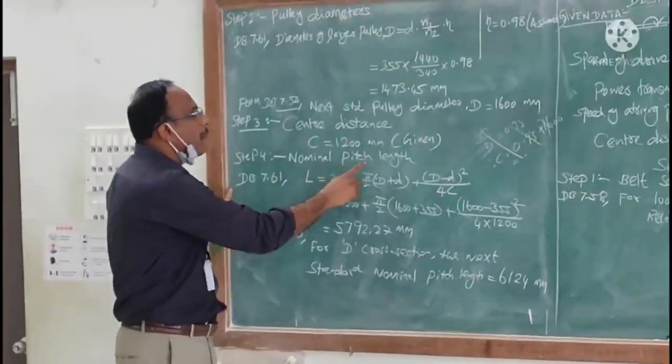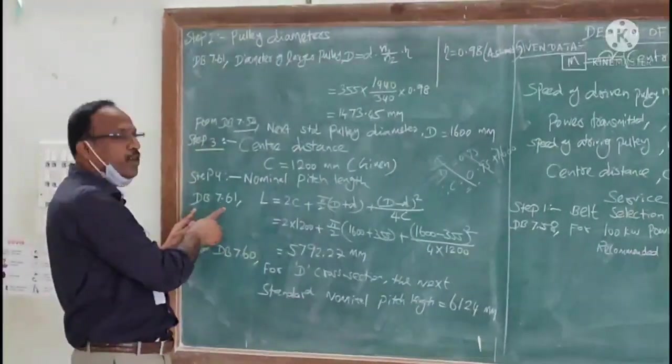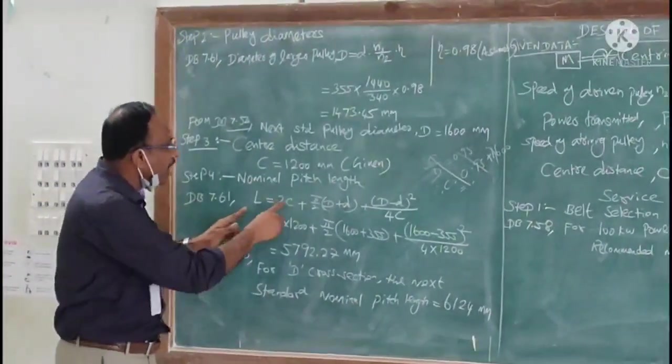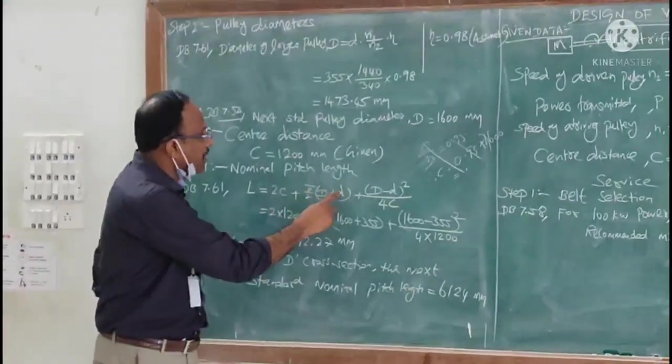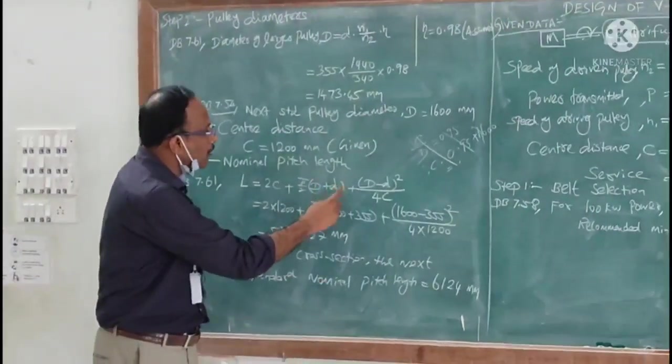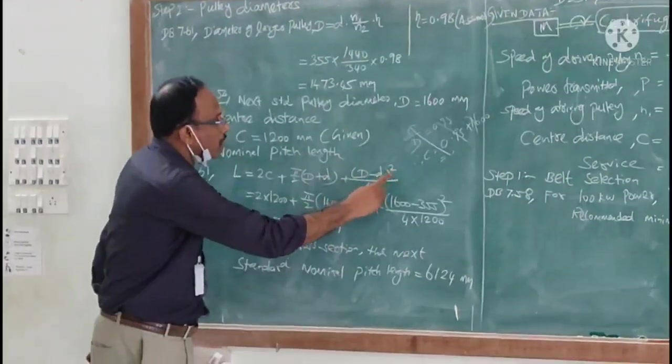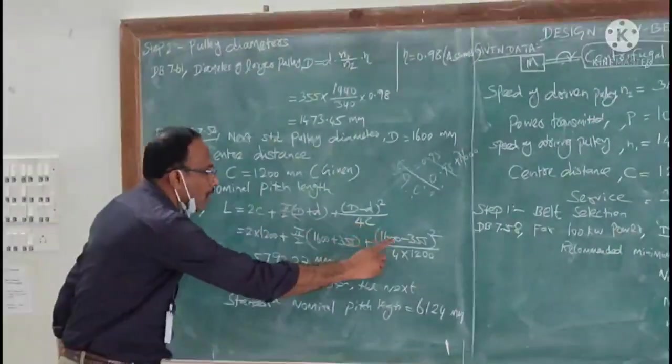Step number 4: nominal pitch length. From the data book 7.61, we have to use this formula: L equals 2C plus pi by 2 times (capital D plus small d) plus (D minus d) squared by 4C. Substitute all these values.